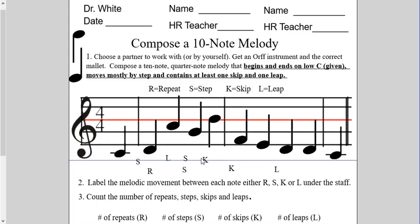Here comes another leap — B to F — that's going to be a leap. And then F to E — that's going to be a step, no-brainer. And then E to D — that's going to be another step. Then D to D — same note, that's a repeat. So there's my repeat. And finally D to C — that's a step, one note next to the next one.